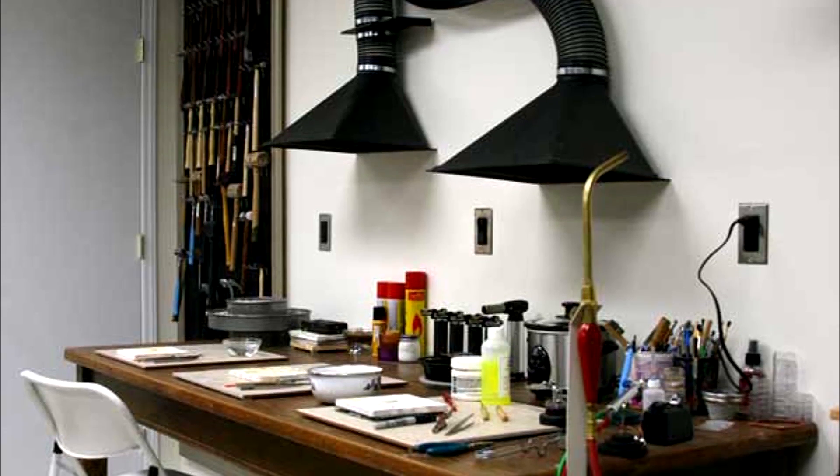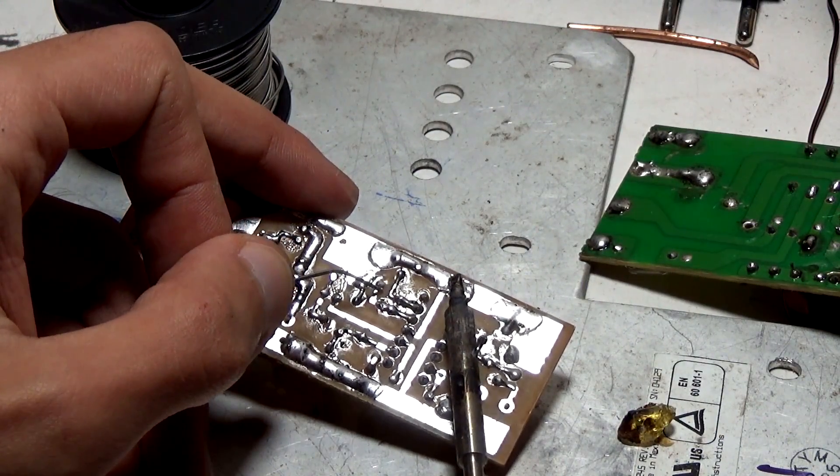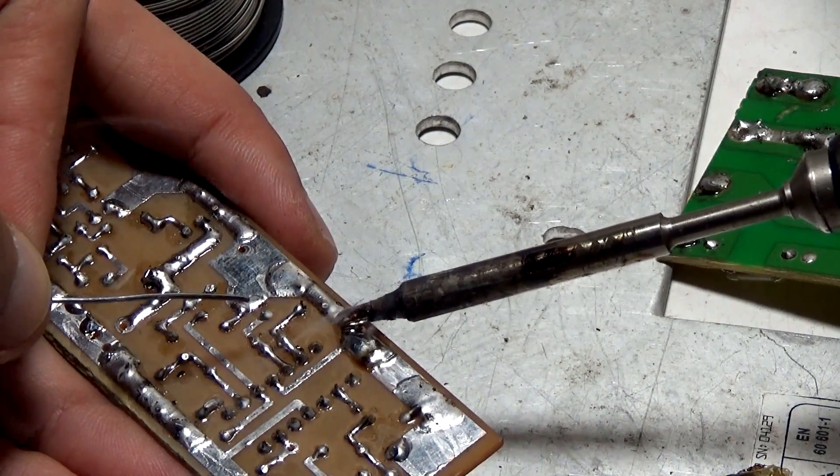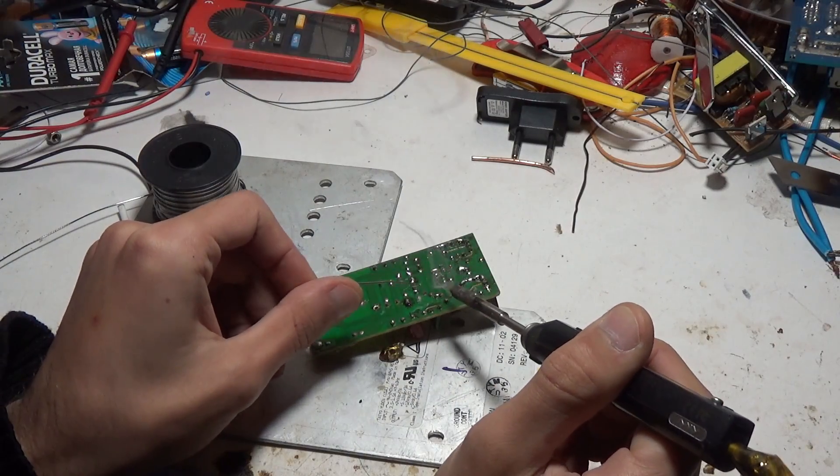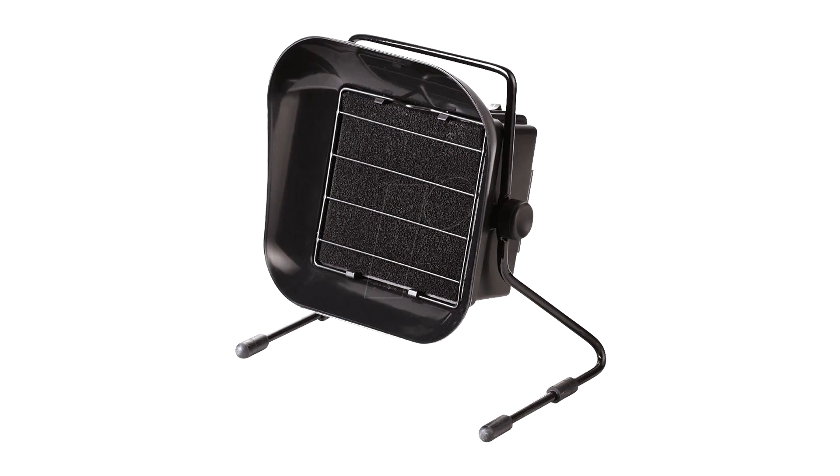Sometimes it's necessary to perforate the wall to install an exhaust system, but if you don't solder very often and soldering is more a hobby than a profession for you, then it makes little sense to use a complicated system. For such situations, you can use smoke traps.